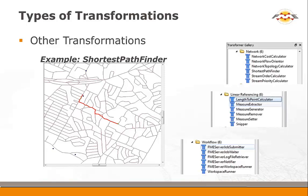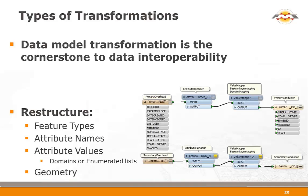There are also more specialized transformation tools in FME: network tools, tools for linear referencing, and workflow management tools — transformers that allow you to trigger other workflows based on decisions made in the current workflow. In some ways you're using the FME Workbench as a scripting tool. The shortest pathfinder is one example of a network tool that defines the shortest distance on a network between a couple of points.